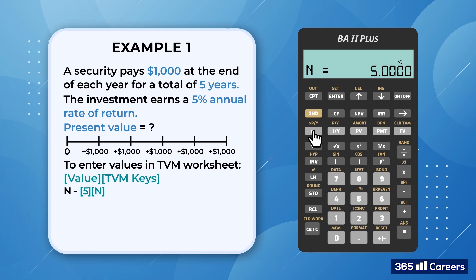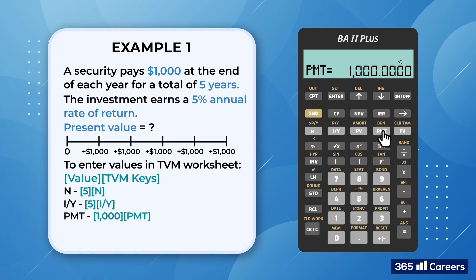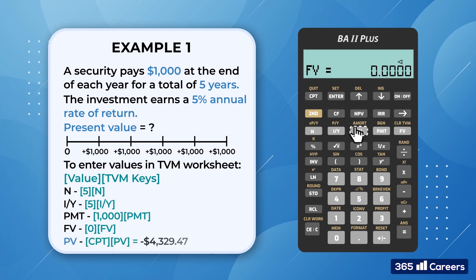Then we have the interest rate per compounding period, equal to 5%. The next variable is the present value, PV — it's what we need to find, so we skip it for now. The payment, PMT, equals $1,000. The future value, FV, is something we don't know, so I'll opt for $0 in this case. The last step is to compute for the present value by pressing CPT followed by PV. The result we obtained is minus $4,329.47.